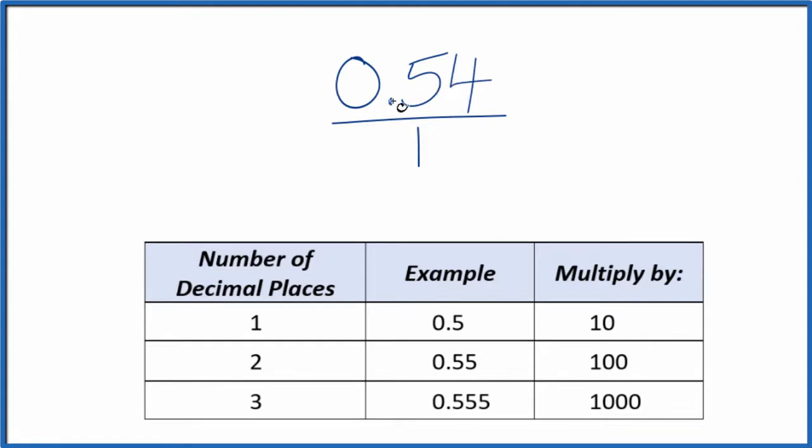Next, we want to get this 0.54 to a whole number. And I can see we have one, two decimal places. Two decimal places, we're going to multiply by 100.